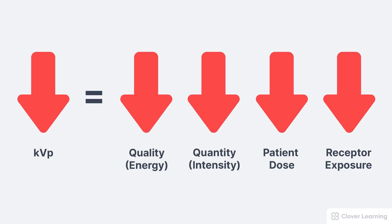The opposite is also true. Decreasing the KVP will decrease the x-ray beam quality — that's the energy — decrease the x-ray beam quantity — that's the intensity — decrease the patient dose, and decrease the receptor exposure.